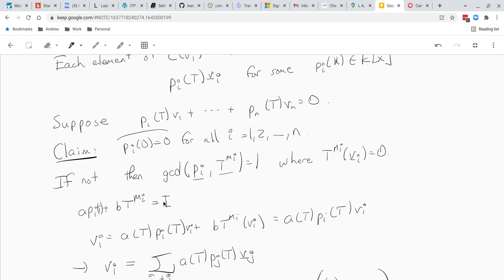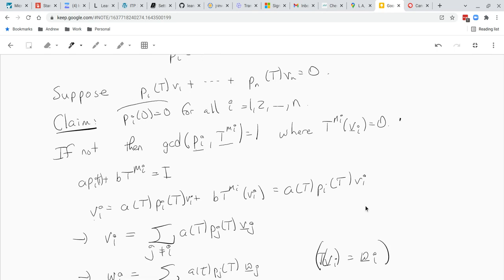So we'll take this equation and apply it to Vi. And then we get the identity applied to Vi is just Vi. And then we get A of T Pi of T of Vi plus B T to the Mi of Vi. And T to the Mi of Vi is just zero. So we get Vi is A of T times Pi of T times Vi. That seems okay. But remember we have this equation relating Pi of T Vi to all the Pj. Like we have the equation P1 of T V1 plus da-da-da-da-da plus Pn of T Vn equals zero.